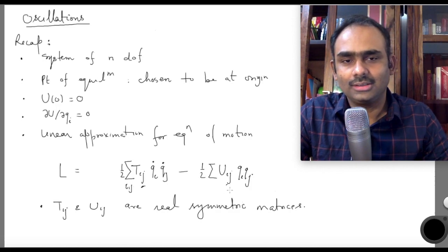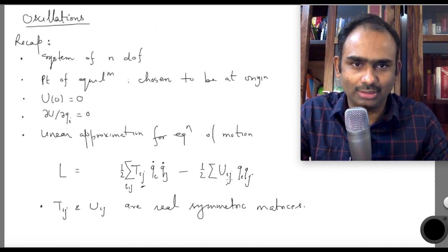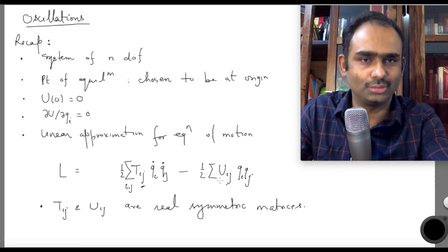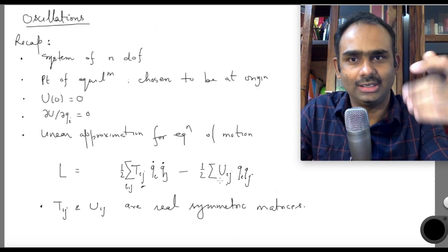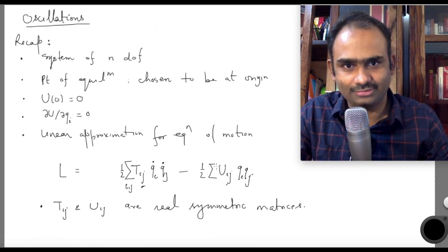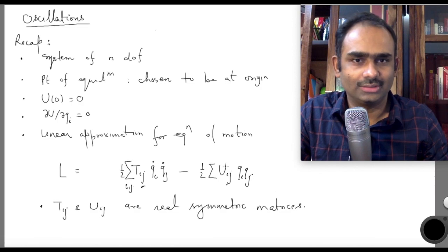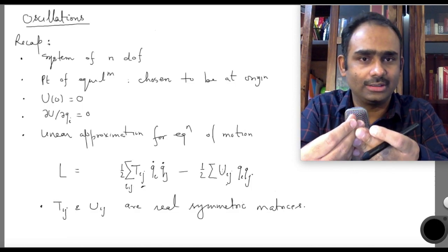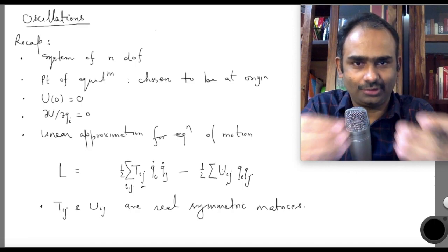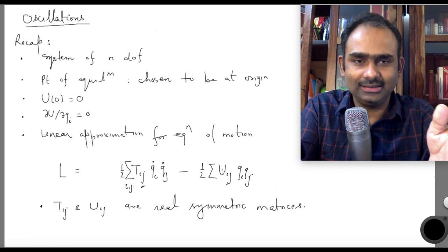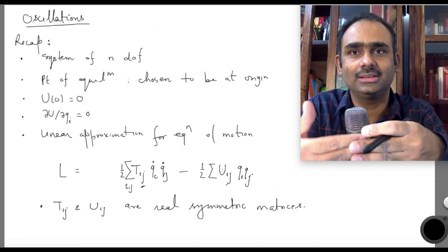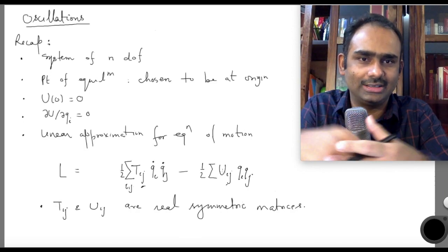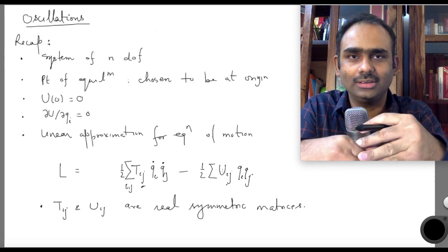I did not make any assumption about U_ij. It was appearing as a second-order term in q_i; the first term was U(0) and the second term involved ∂U/∂q_i which went to 0. Depending on what values the coefficients take, the point could be a stable equilibrium, unstable equilibrium, or whatever — that information is coded in U_ij. For now we will pretend we are near a stable equilibrium and proceed; later we will also talk about unstable equilibrium.